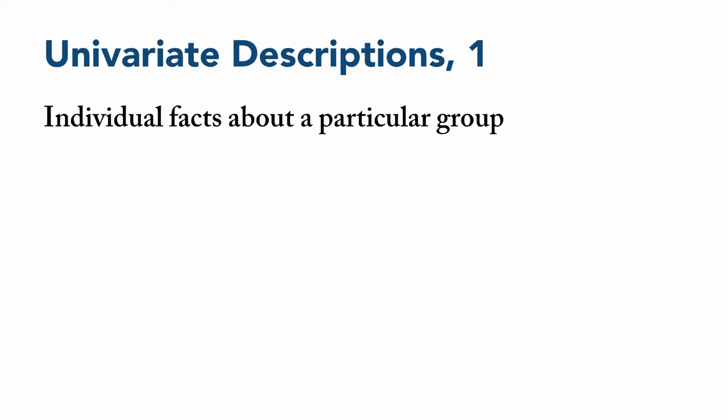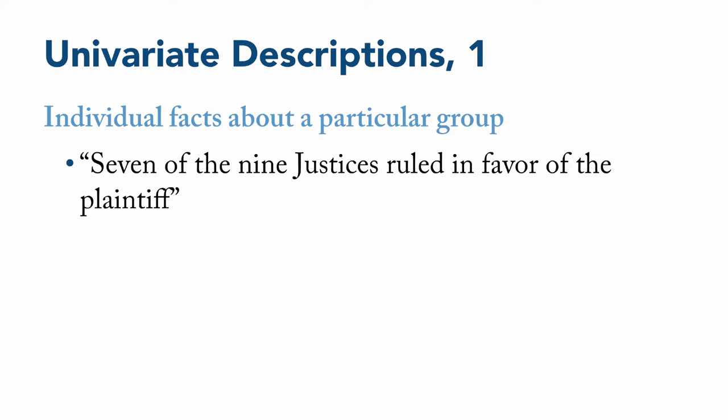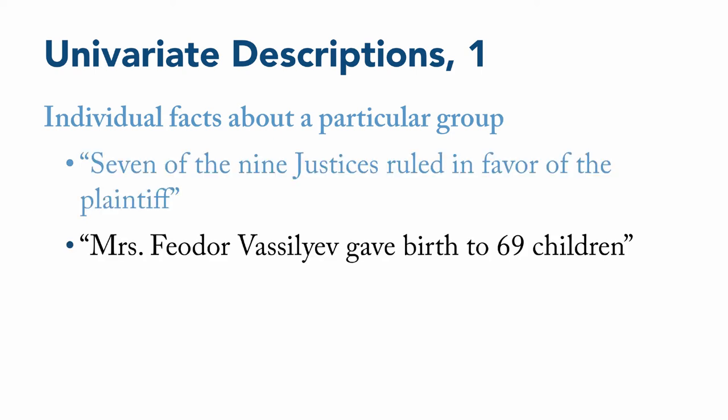These are individual facts about a particular group of people, such as seven of the nine Supreme Court justices ruled in favor of the plaintiff or Mrs. Feodor Vasilyev, a Russian peasant, gave birth to 69 children between 1725 and 1765, which is apparently true.